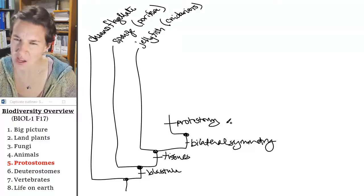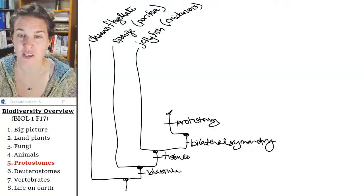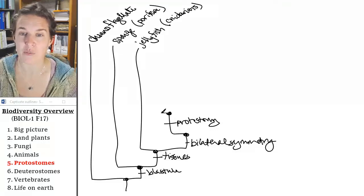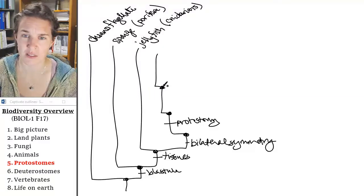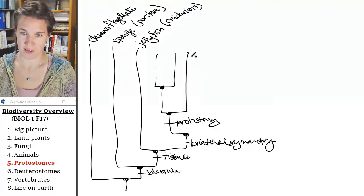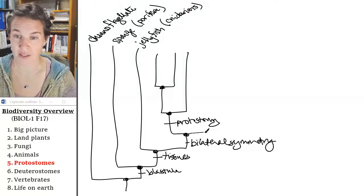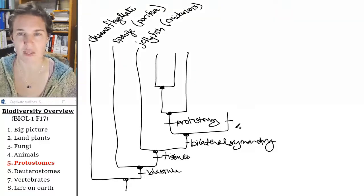There are actually three groups that we're going to talk about from this point. And all of them are protostomes — as distinguished from these other groups who are going to be something that's not protostomes. You can have a hint by looking at the outline.